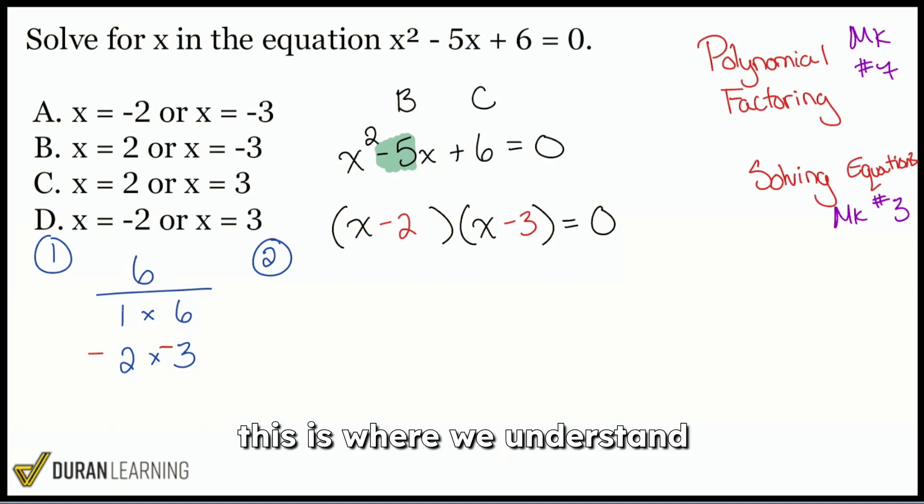The factor pair was negative 2 and negative 3 to solve this. Now, this is where we understand the following: the right side here is zero. And we are multiplying this times this. So how do we get zero? By multiplying by zero, right? Anything times zero is zero.